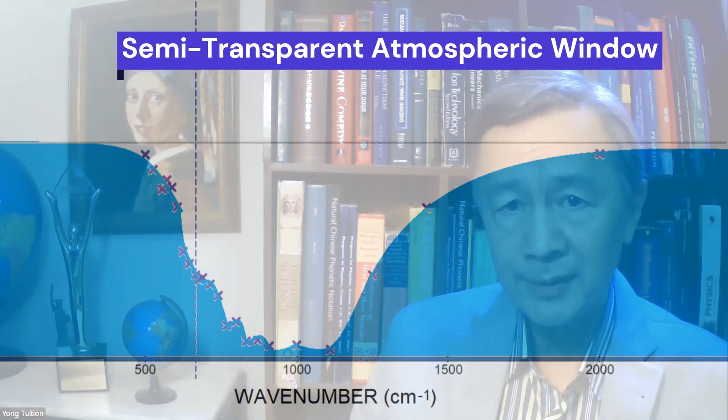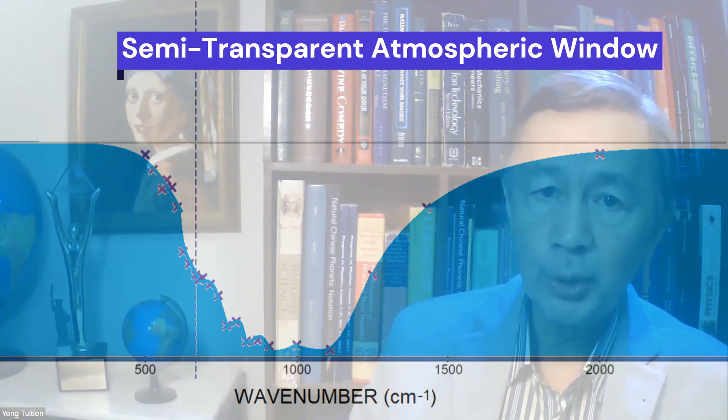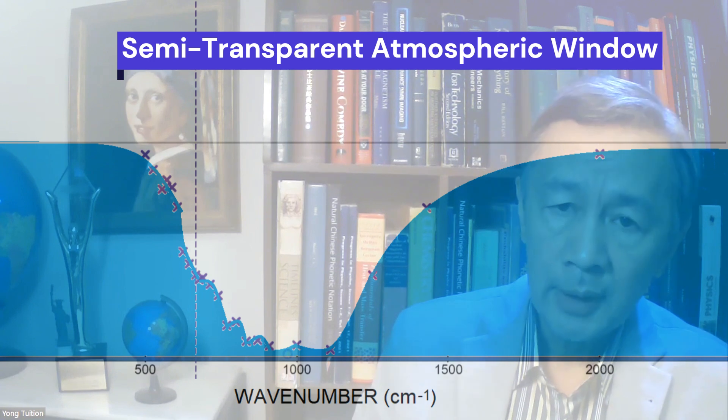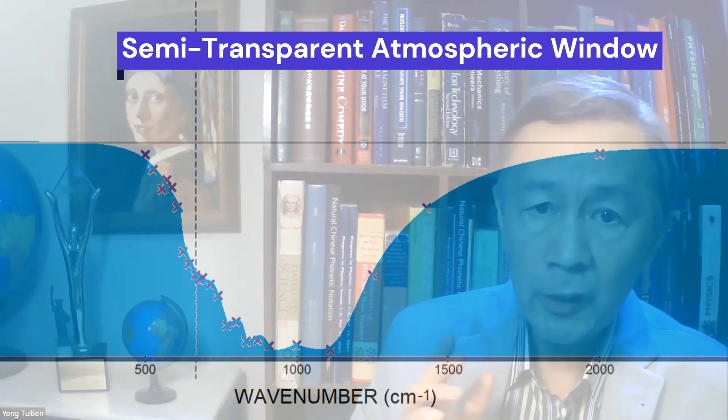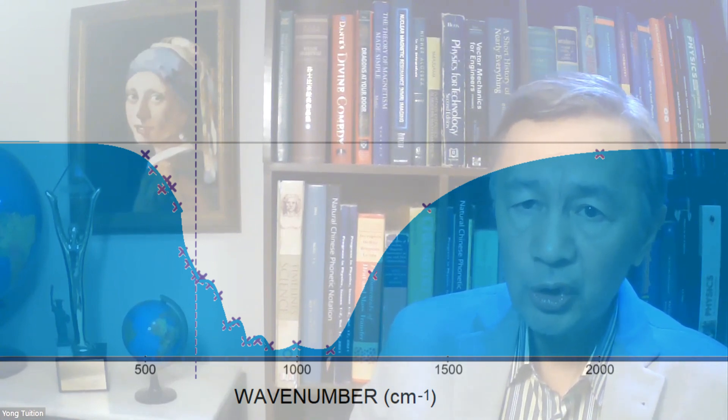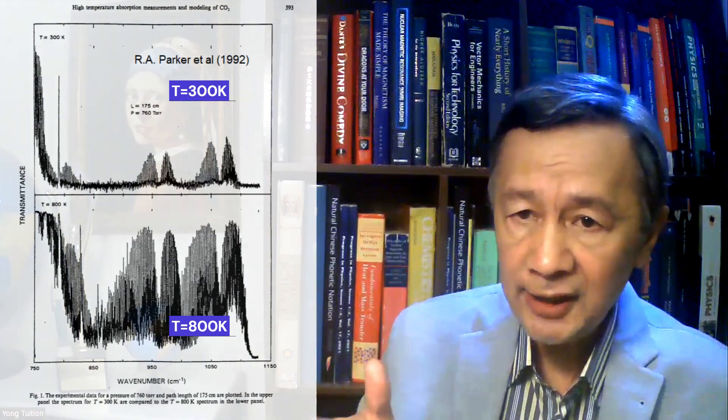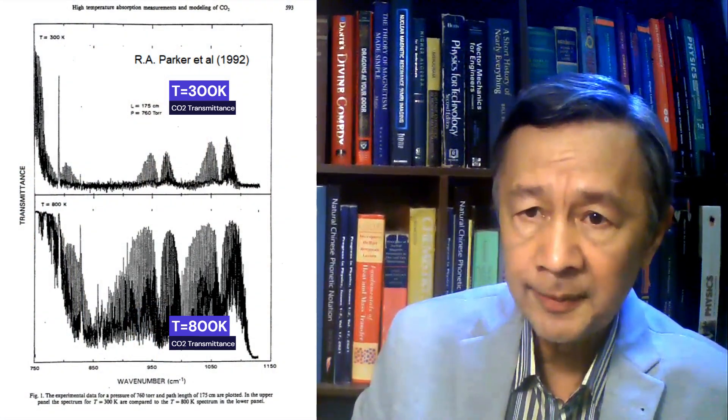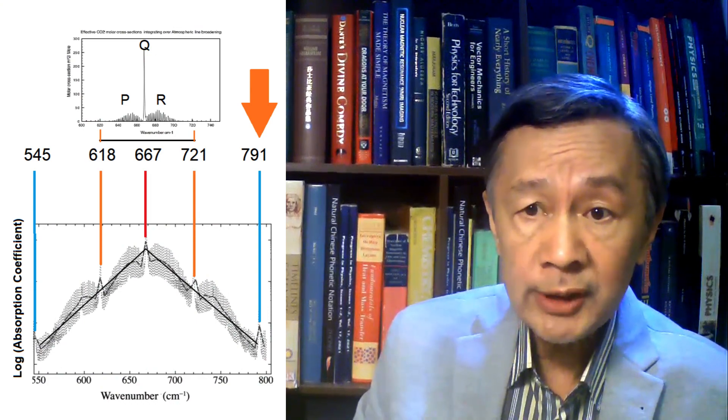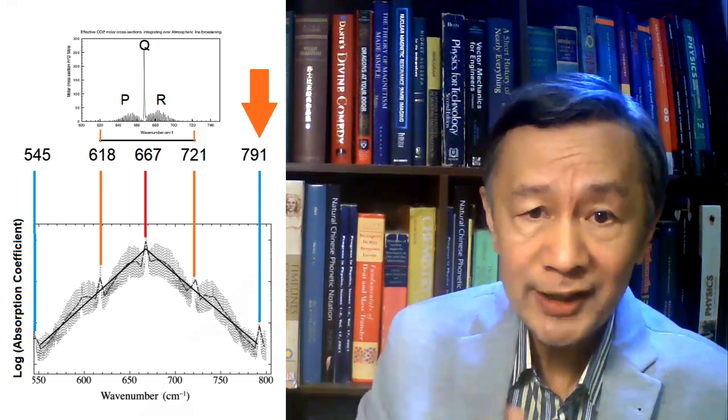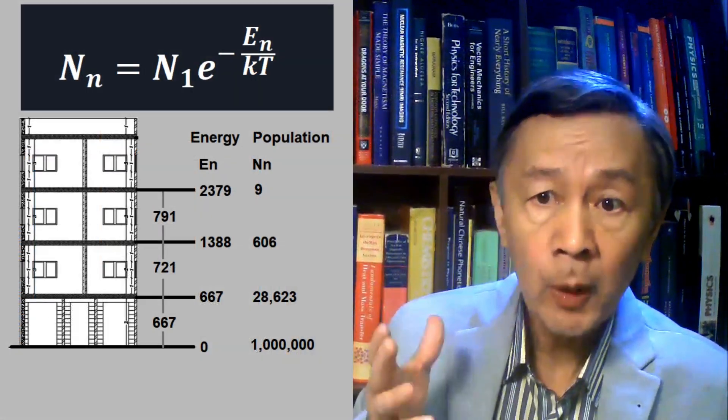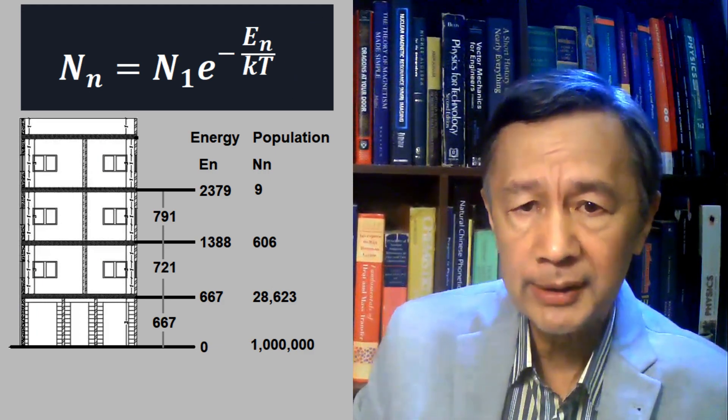As you can see, in general, water vapor can absorb infrared wave at almost all wave numbers, although the absorption is relatively weak between 8 to 30 microns in wavelength. In other words, the so-called atmospheric window is not completely transparent. In passing, the CO2 transitions between 750 and 1150 per centimeter can only be observed at a high temperature. As you can see this example, the temperature is 800 K. Besides, the CO2 Q branch near 781 per centimeter should be near 791 per centimeter and its transition probability is several orders of magnitude weaker than that of the central Q branch, as I discussed before.